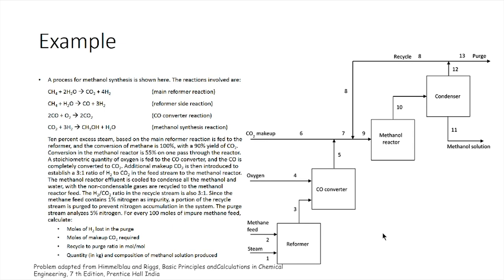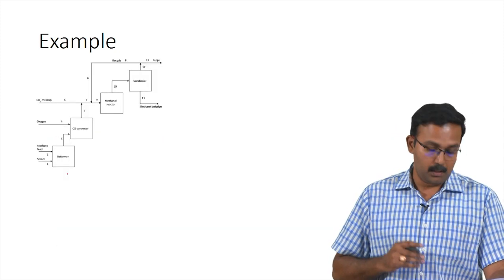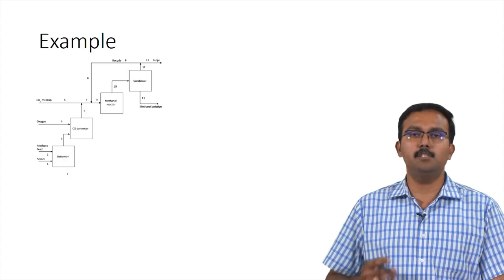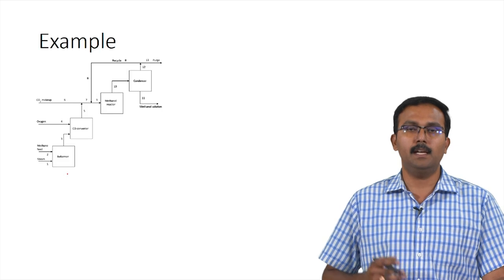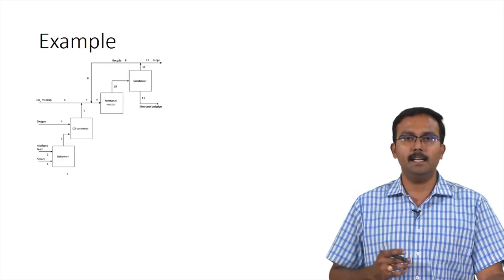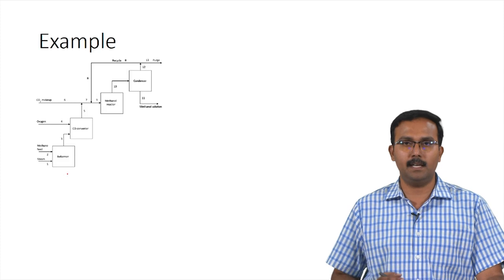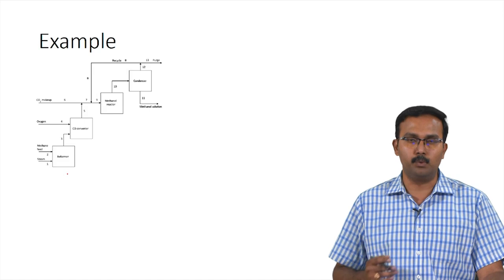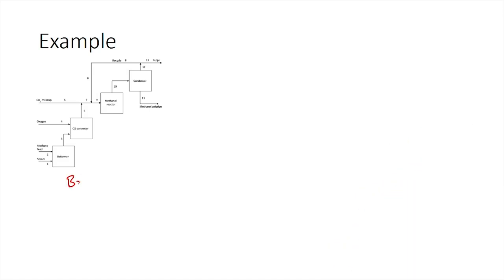This problem covers all the aspects of chemical reactions with recycle and purge for a multi-unit system. The basis is 100 moles of impure methane in stream 2, which is 99 percent methane and 1 percent nitrogen, giving us 99 moles of methane and 1 mole of nitrogen in stream 2.